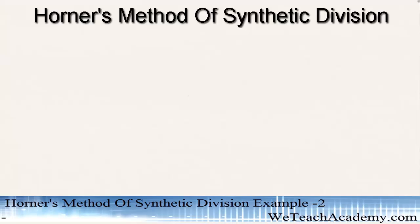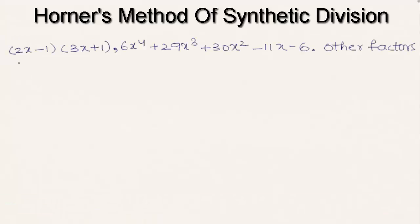Welcome to vtishacademy.com. In this presentation we are going to solve an example on Horner's method of synthetic division. Given that 2x-1 and 3x+1 are factors of the polynomial 6x⁴ + 29x³ + 30x² - 11x - 6, we have to find the other factors of this polynomial.